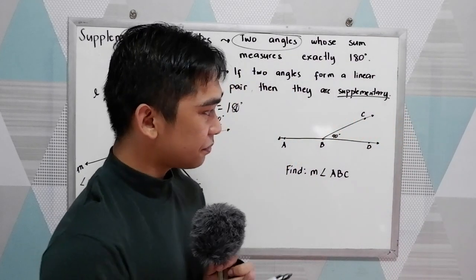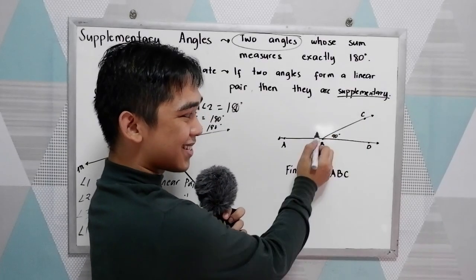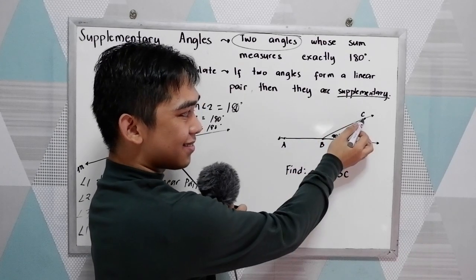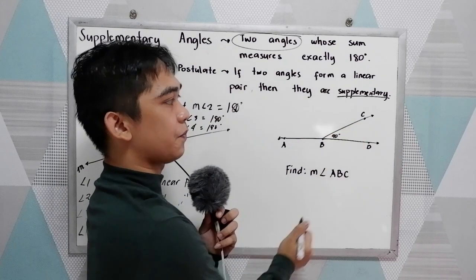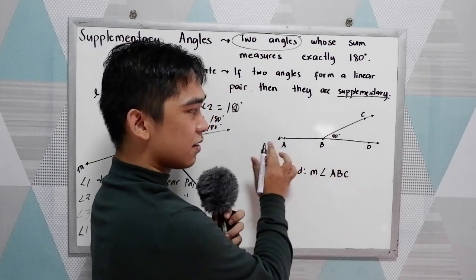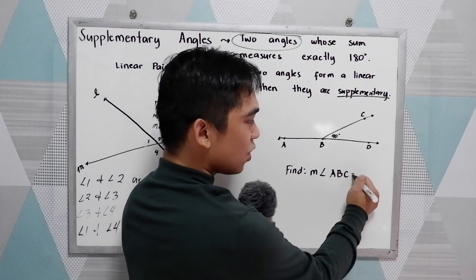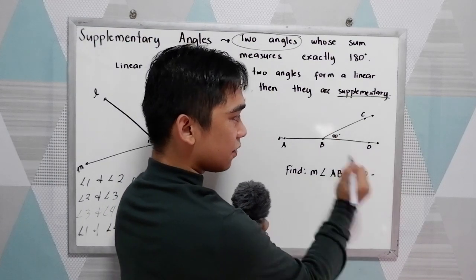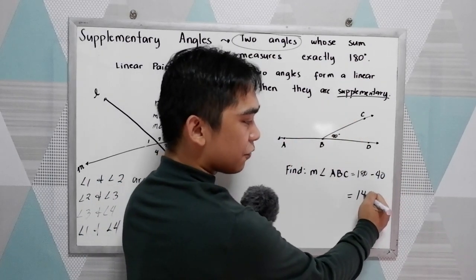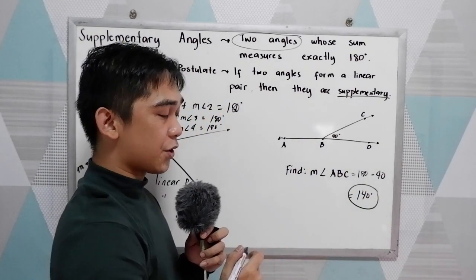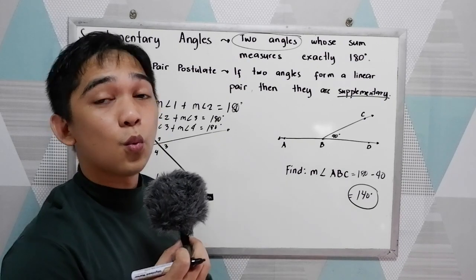Another example: we have angle ABC, which is unknown, and angle CBD equals 40 degrees. We're going to find the measure of angle ABC. The two angles form a linear pair, so they are supplementary. Therefore, to get angle ABC, we subtract 40 from 180. The measure of angle ABC is equal to 140 degrees. To check: 140 plus 40 equals 180 degrees.